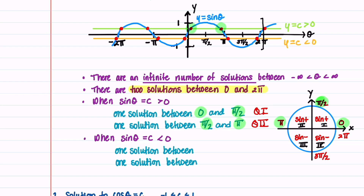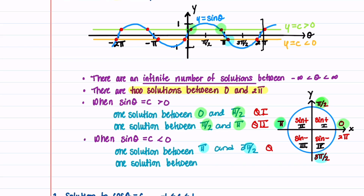When sine θ is equal to a negative number, one solution lies between π and 3π/2, which is in the third quadrant, and the other solution lies between 3π/2 and 2π, which is in the fourth quadrant. To recap: when sine θ is positive, there's one solution in the first quadrant and one in the second quadrant; when sine θ is negative, there's a solution in the third quadrant and a solution in the fourth quadrant.